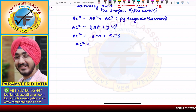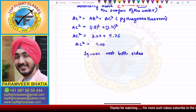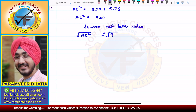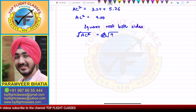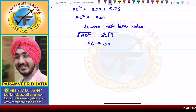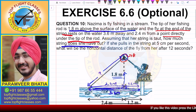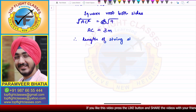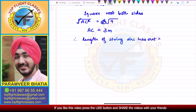AC² = 3.24 + 5.76, so AC² = 9. Taking the square root of both sides, AC = ±√9. We reject the negative value because AC represents the length of the string, which cannot be negative. Therefore AC = √9 = 3 meters. So the length of the string she has out is equal to 3 meters.